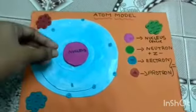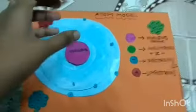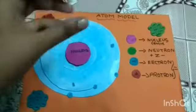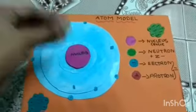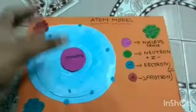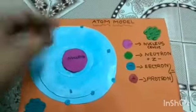Next we can see about what is the formula to calculate AMU. AMU means atomic mass unit is calculated by protons plus neutrons.